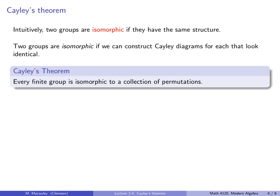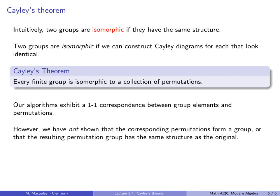Cayley's theorem says that every finite group is isomorphic to a collection of permutations. Our algorithms exhibit a one-to-one correspondence between group elements and permutations. So I've showed you how to do this constructively. However, we have not shown technically that the corresponding permutations actually form a group, or that the resulting permutation group actually has the same structure as the original. It should be pretty darn obvious that it does, though.